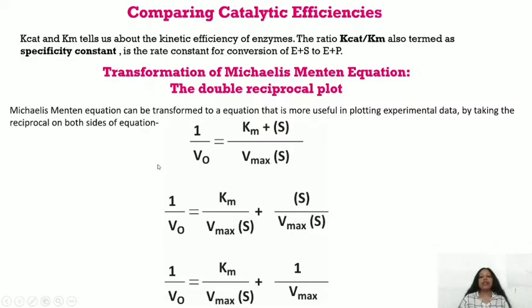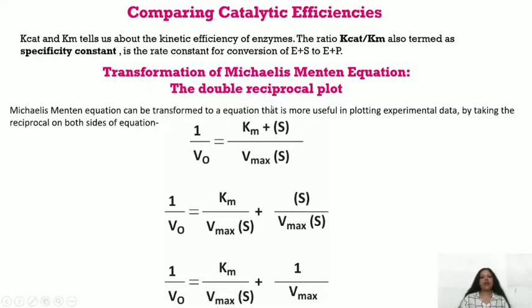Every term in enzyme kinetics has significance. We are first introduced to a term, then its definition, then an equation, and then its significance. Now we move to the transformation of the Michaelis-Menten equation — the double reciprocal plot. Taking the reciprocal of both sides of the Michaelis-Menten equation, we get: 1/v₀ = (Km + [S]) / (Vmax × [S]).